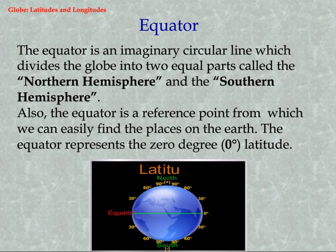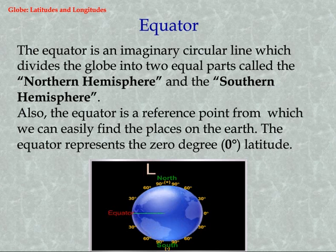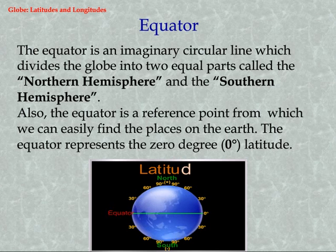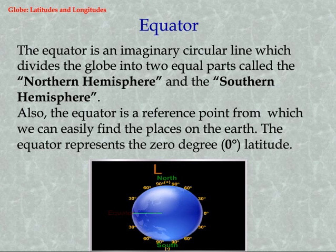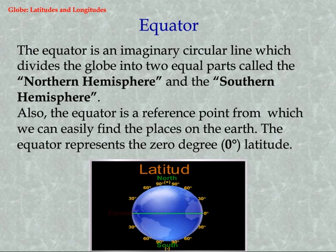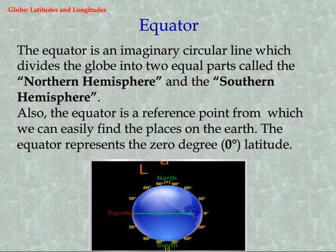Equator. The equator is an imaginary circular line which divides the globe into two equal parts called the Northern Hemisphere and the Southern Hemisphere. The equator is a reference point from which we can easily find places on the Earth. The equator represents the zero-degree latitude.